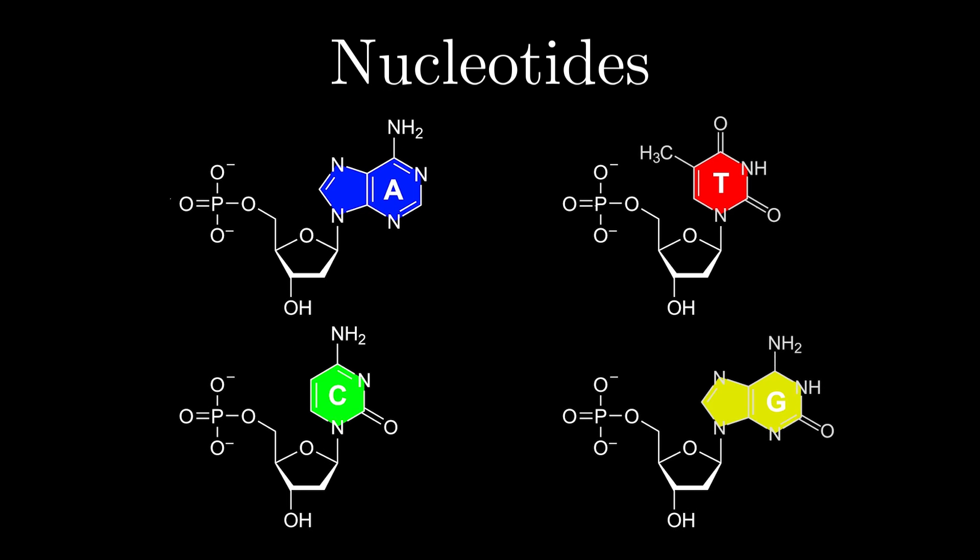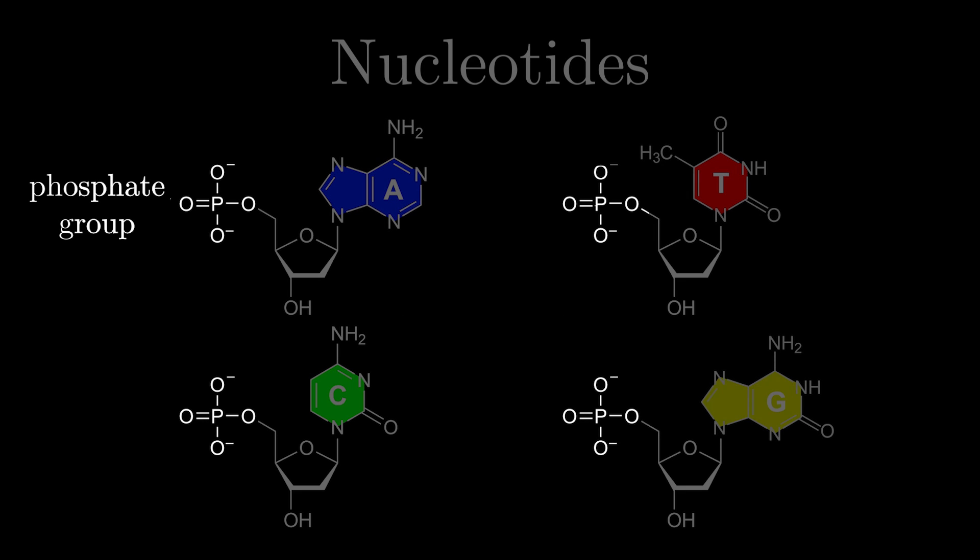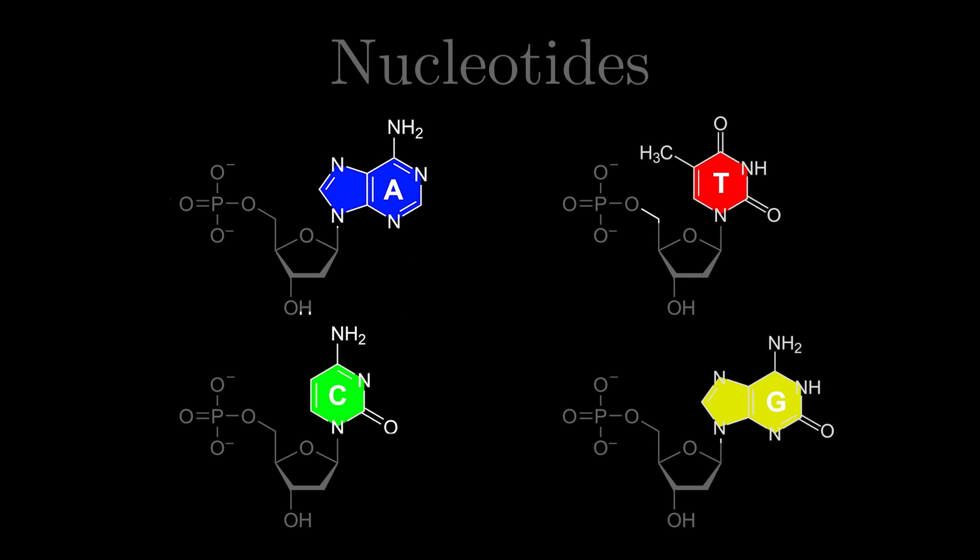These nucleotides are made of three parts: a sugar with five carbons, a negatively charged phosphate group, and something that has a lot of nitrogens, appropriately named nitrogenous bases.